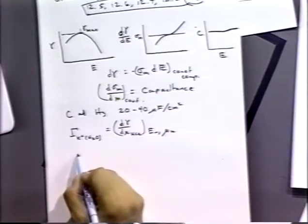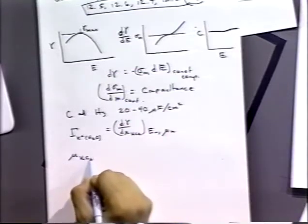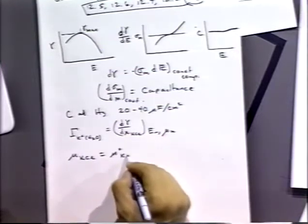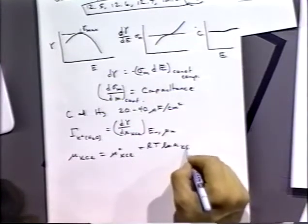We can get that, and knowing the fact that chemical potential of the potassium chloride is equal to the standard chemical potential of potassium chloride plus the change in the activity of potassium chloride, we get this sort of relationship.